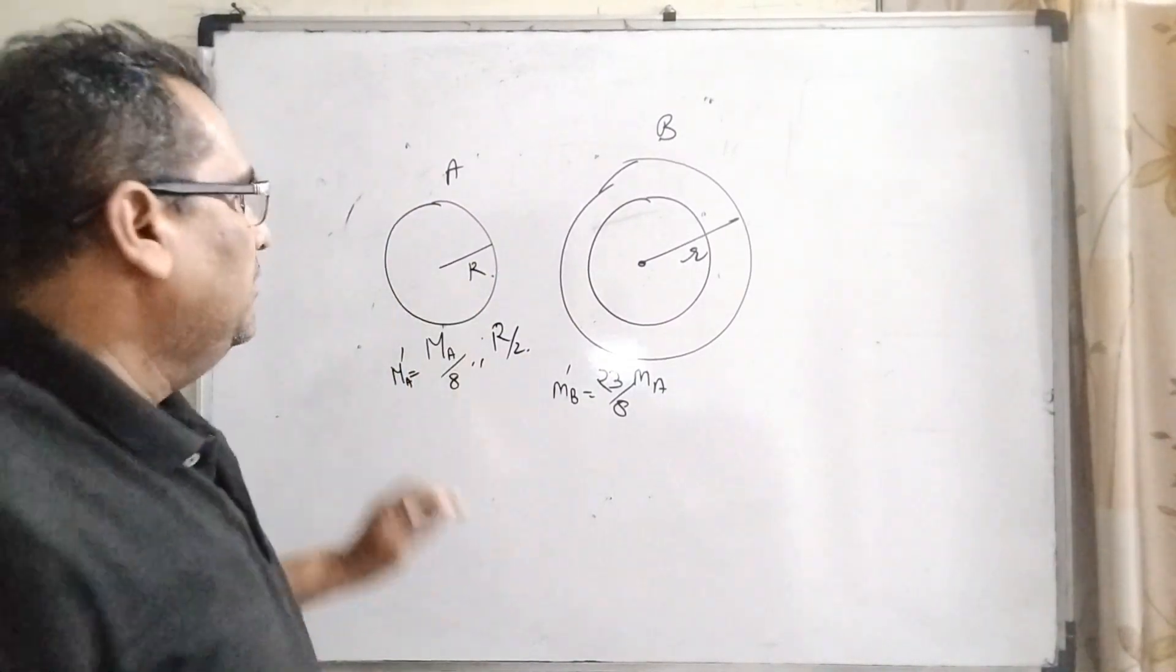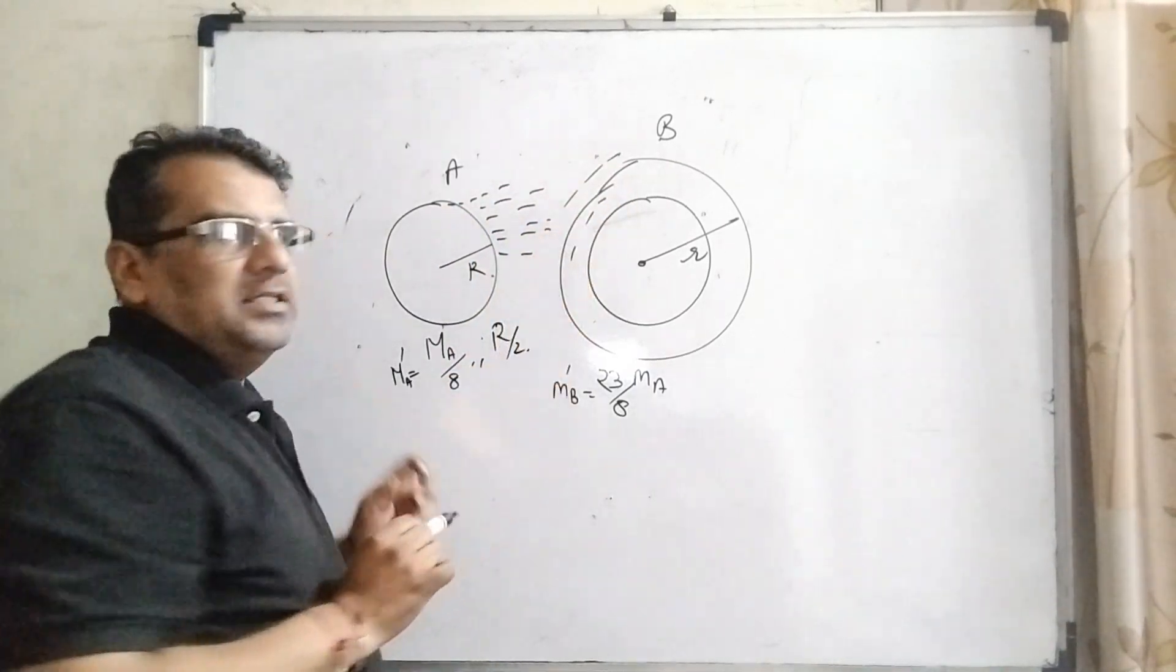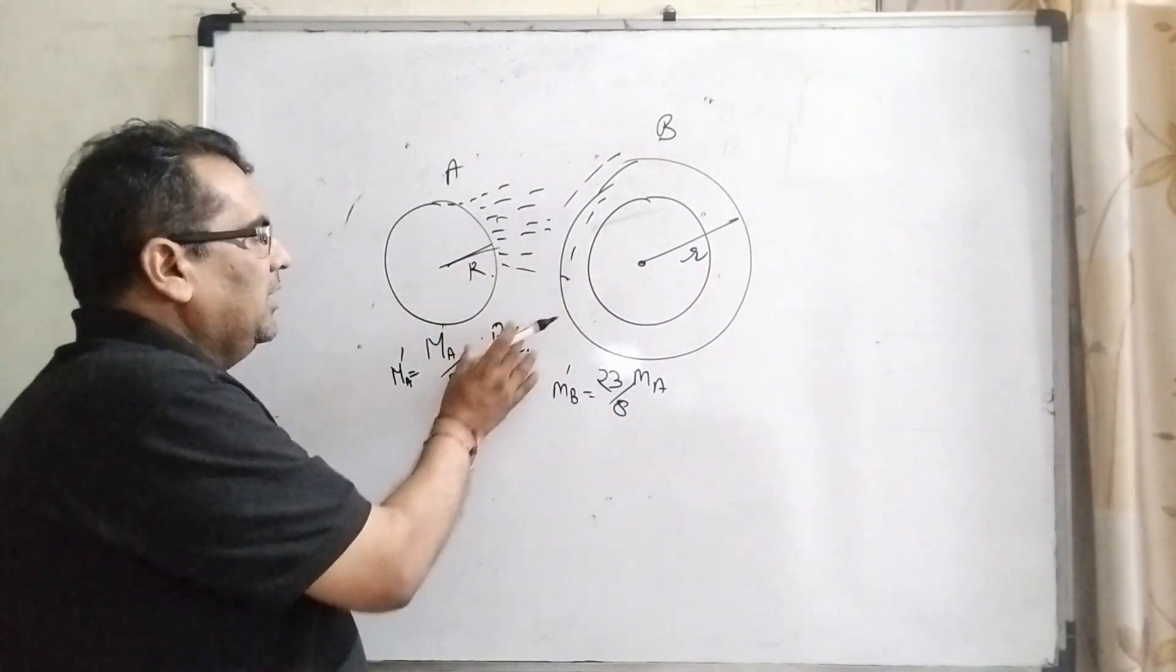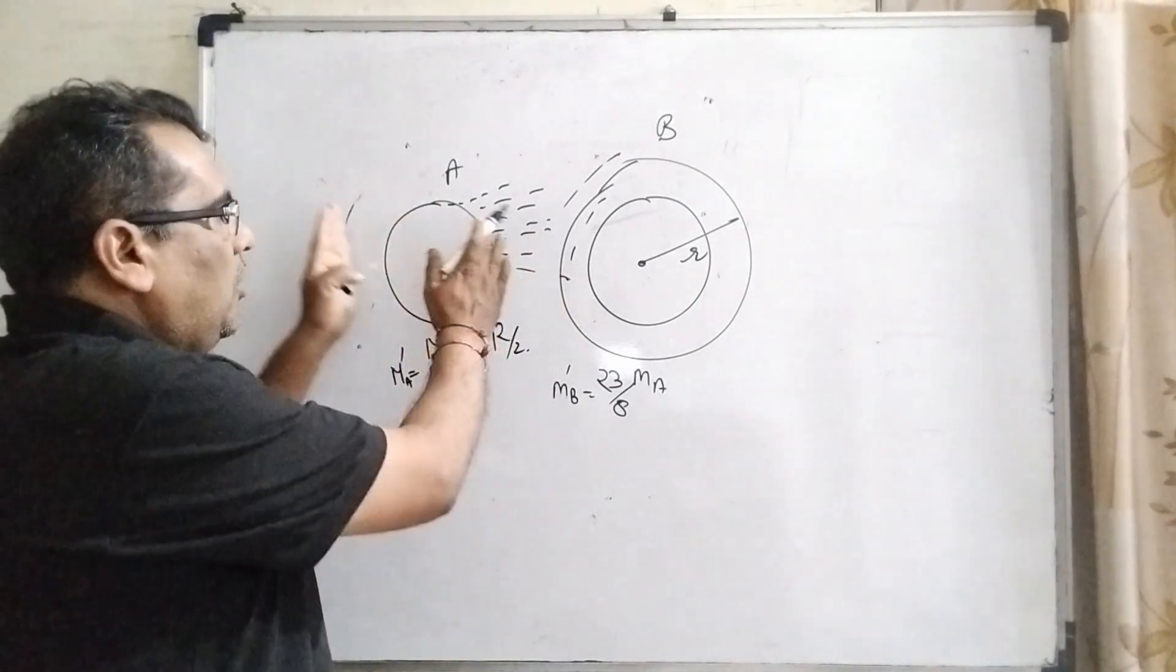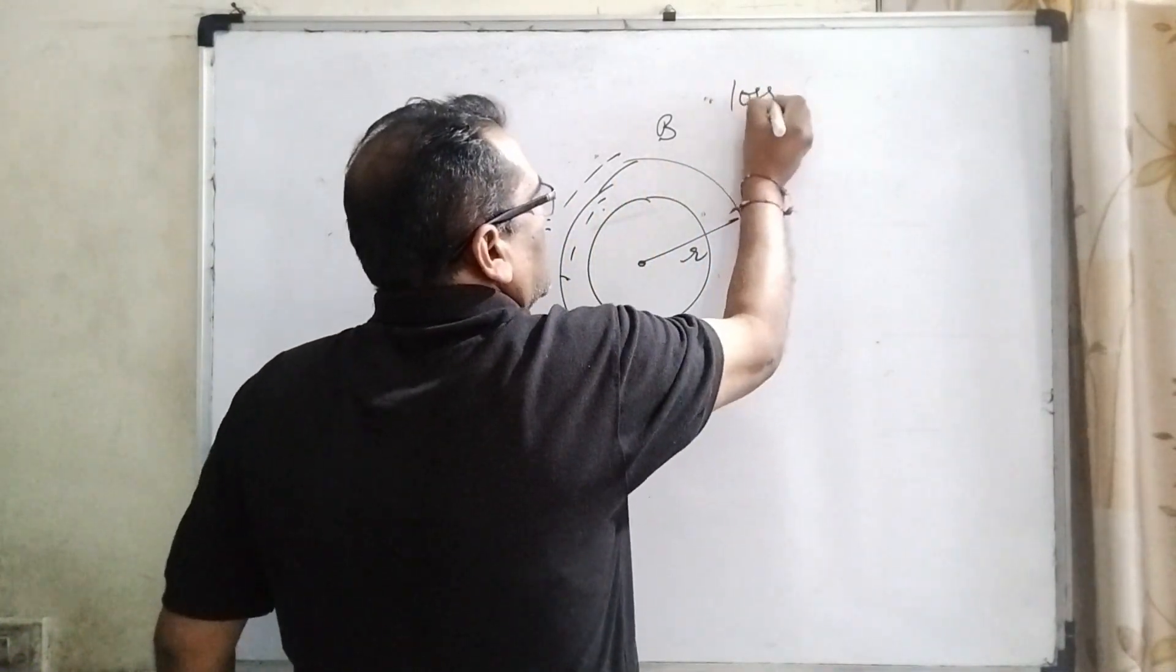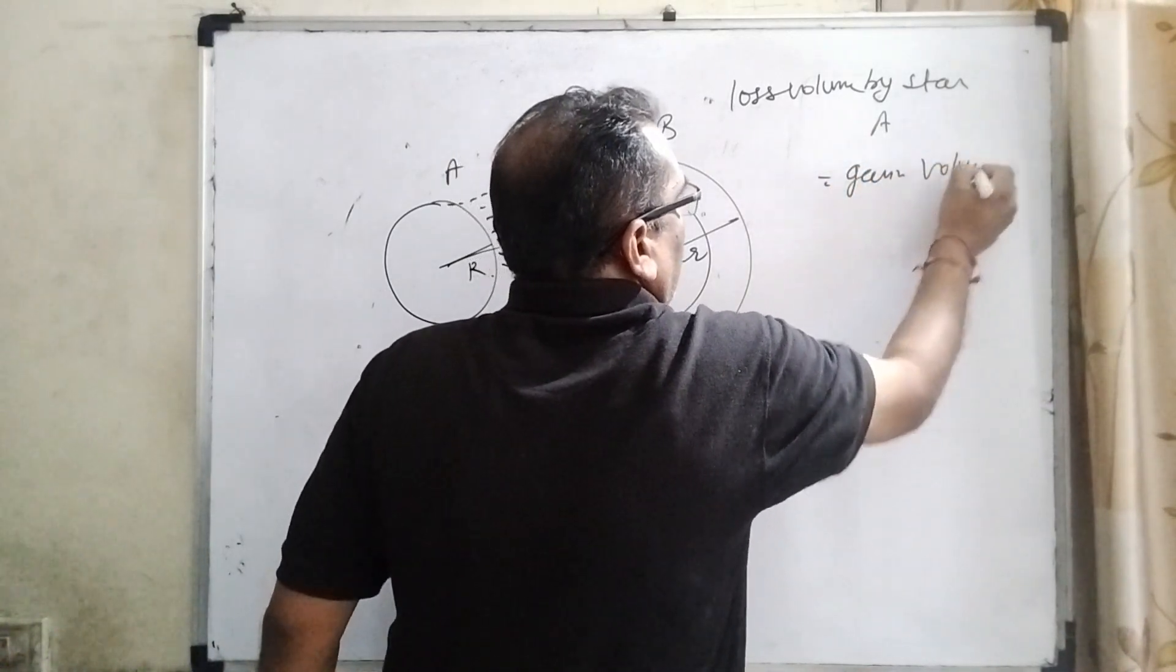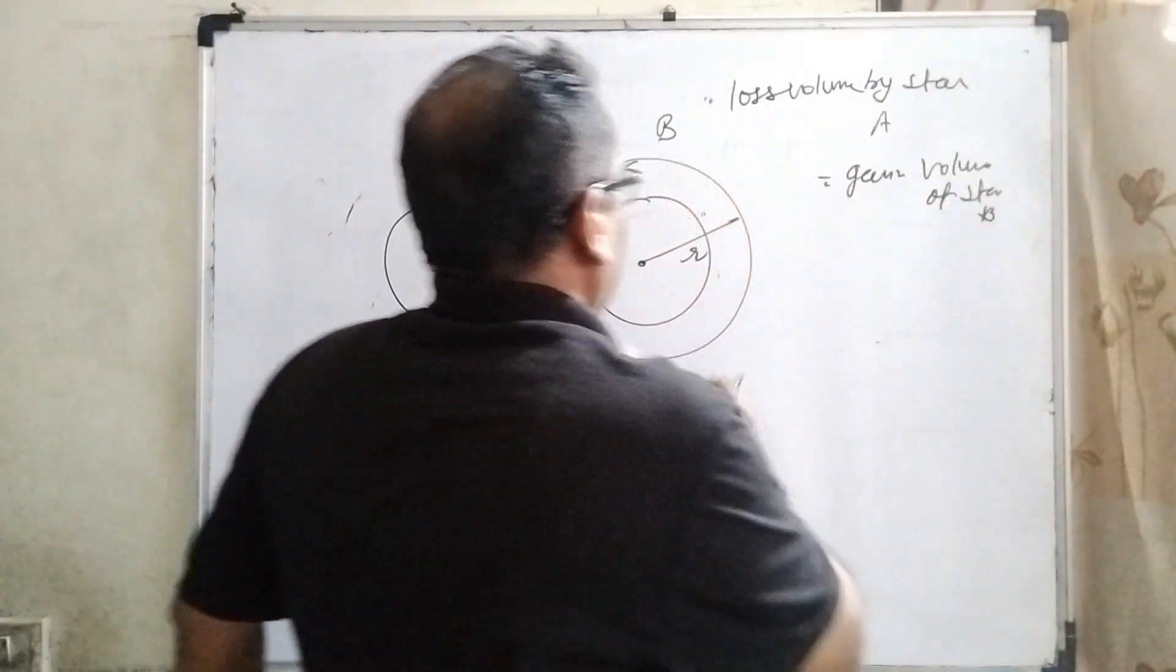According to the given question, some mass is removed here and deposited at star B, so the radius is changed. We have to find this radius. Because after losing this material, radius of A becomes R/2. How can we get it? Loss volume equals gain volume. So here we use loss volume by star A equals gain volume of star B.